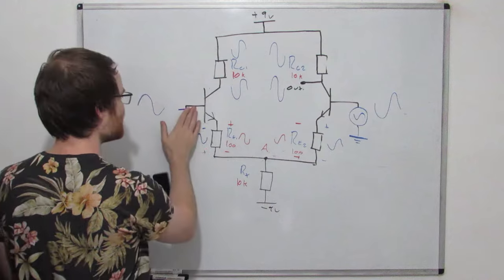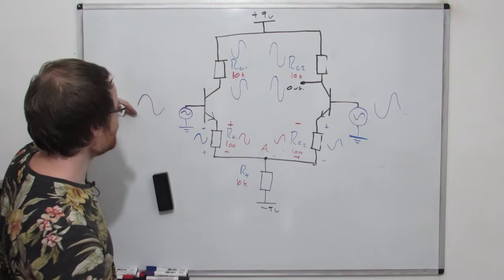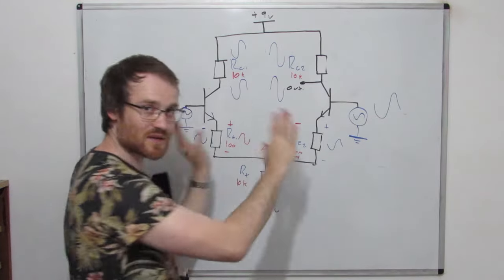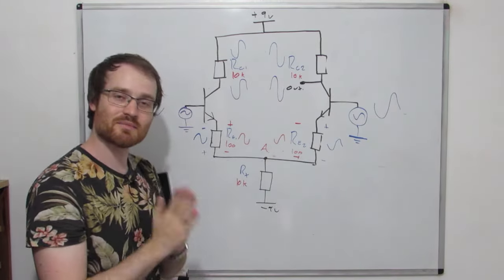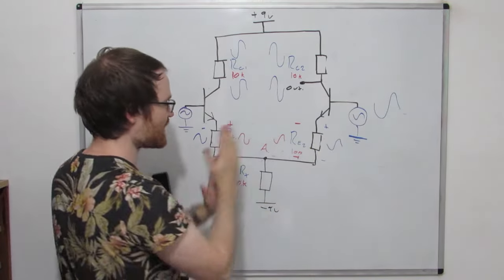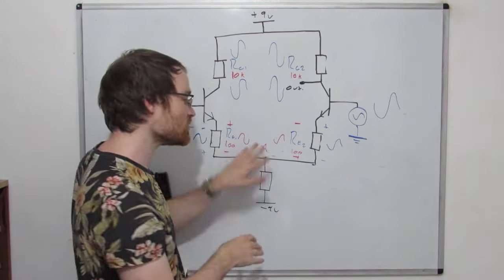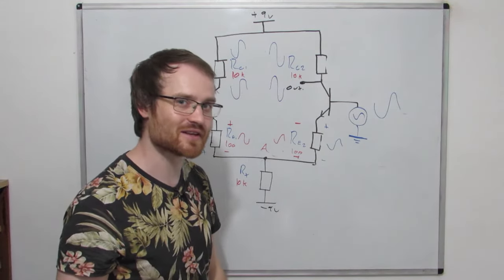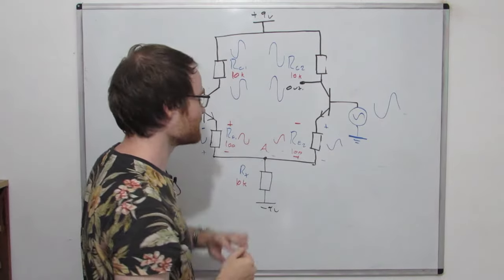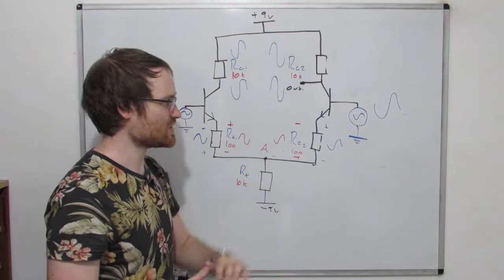So now if we apply both signals at the same time, as one input rises the other is falling. Because these are completely symmetrical, this point A in the middle remains completely fixed while these differential signals are swinging up and down. That is why we can take point A as a fixed reference point — just like a ground. We can even call this point ground if we want; ground doesn't choose itself, and as long as it's a fixed reference point we can take ground there. That's why we can do this analysis and essentially ignore this resistor for the differential signals.